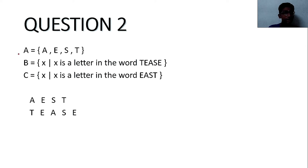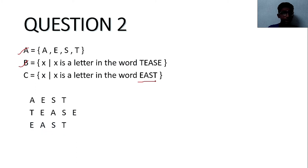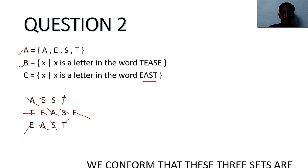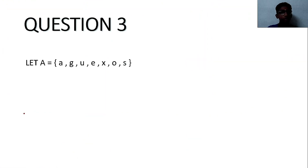Now we know that sets A and B are equal. We check whether set C is also equal to A and B. We write the elements of set C and cross-check: A and A, E and E, S and S — no other alphabets appear. So C is also an equal set. Therefore, all three sets A, B, and C are equal.